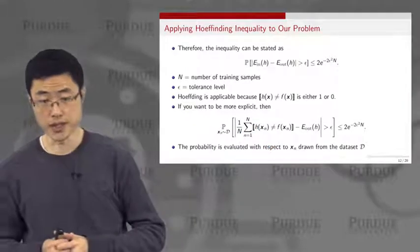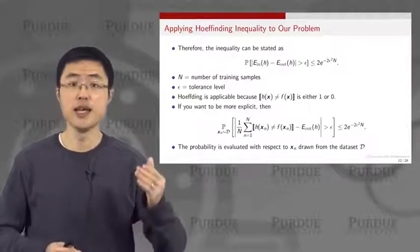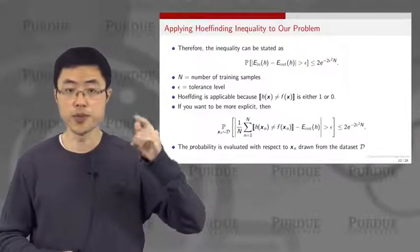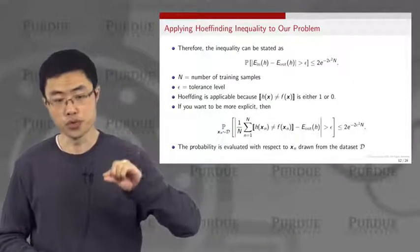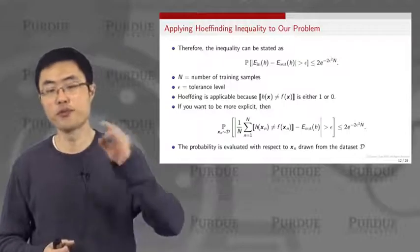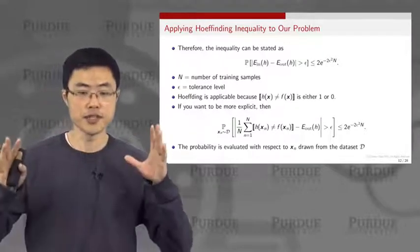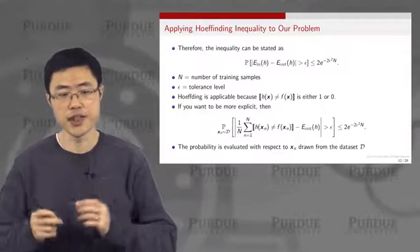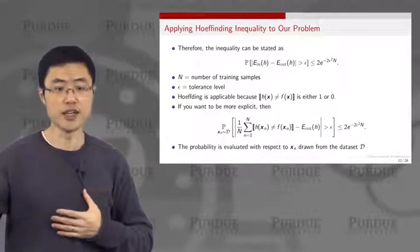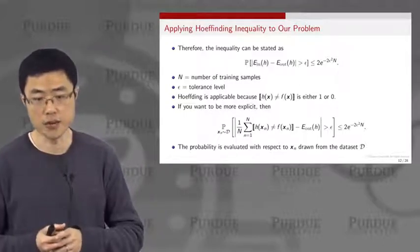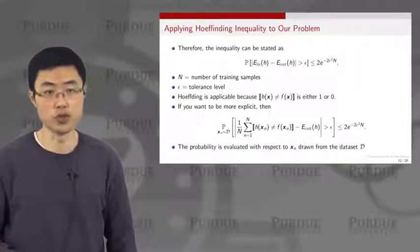E_out is a deterministic number, and the probability here is over Xn drawn from distribution P(X). This entire probability asks: what is the probability that my in-sample error deviates significantly from the out-sample error? The right-hand side says this probability is very, very small as n goes to infinity.